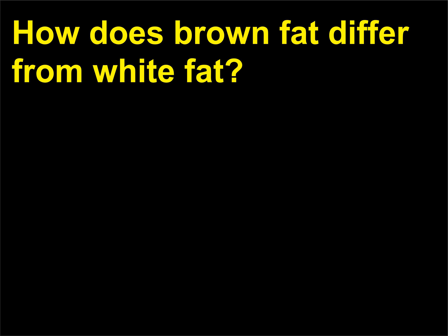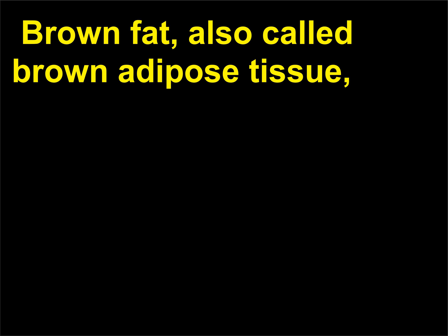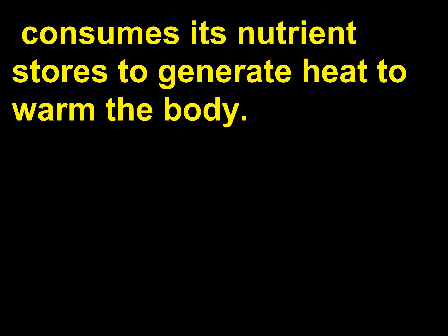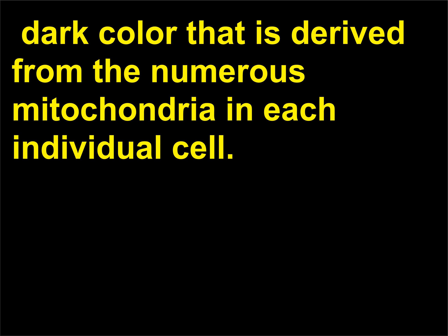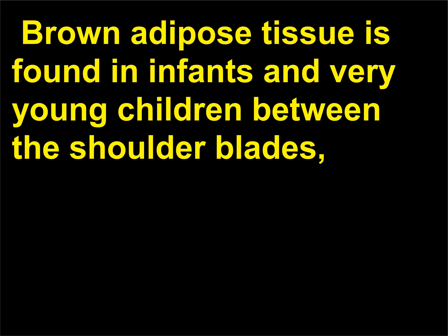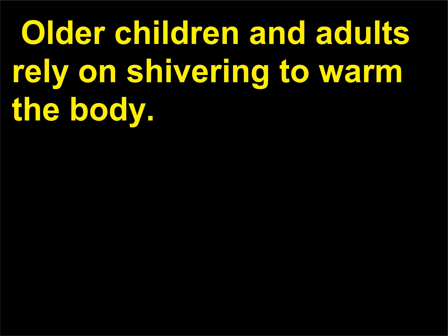How does brown fat differ from white fat? White fat, or adipose tissue, stores nutrients. Brown fat, also called brown adipose tissue, consumes its nutrient stores to generate heat to warm the body. It is called brown fat because it has a deep, rich, dark color that is derived from the numerous mitochondria in each individual cell. Brown adipose tissue is found in infants and very young children between the shoulder blades, around the neck, and in the anterior abdominal wall. Older children and adults rely on shivering to warm the body.